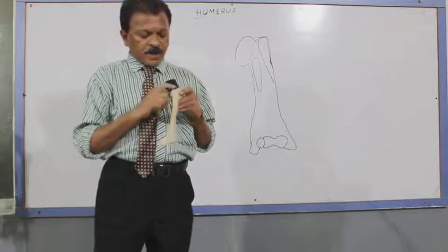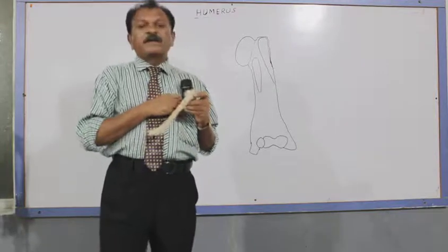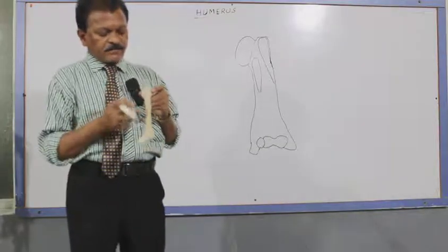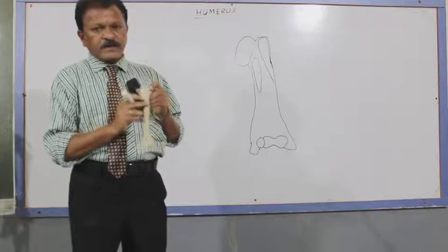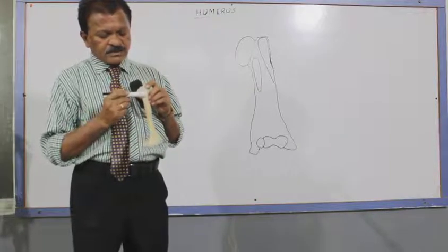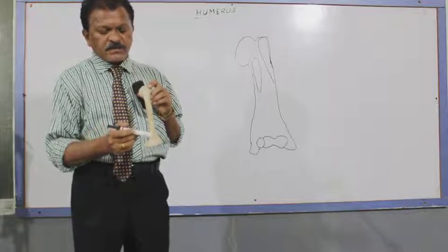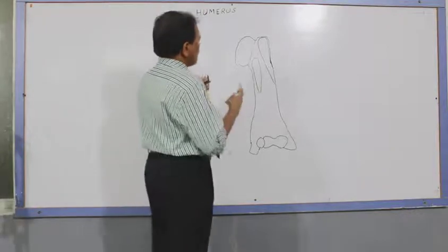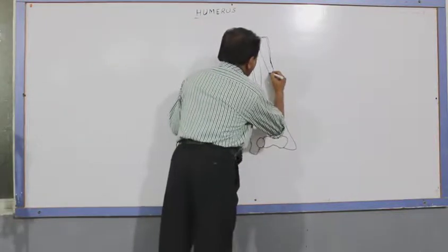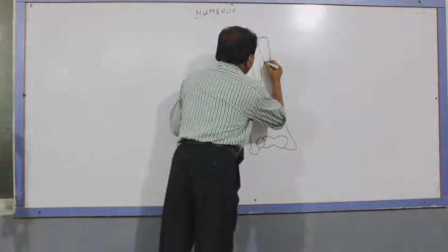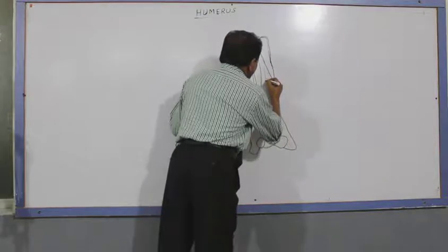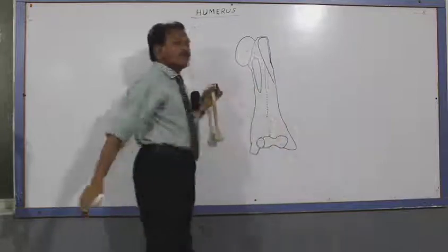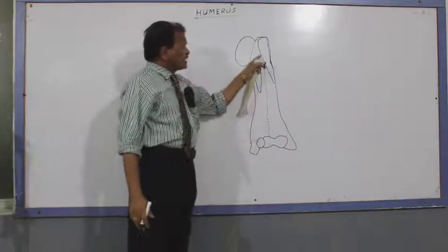The first is the anterior border. It begins at the level of the anterior border of the greater tubercle of the humerus and it descends downwards, extending up to the lower end of the humerus.